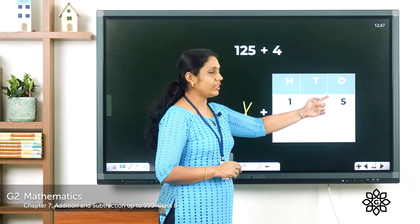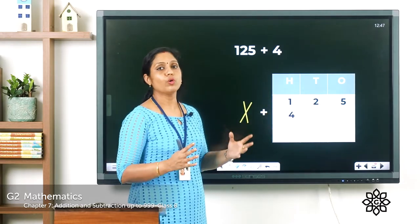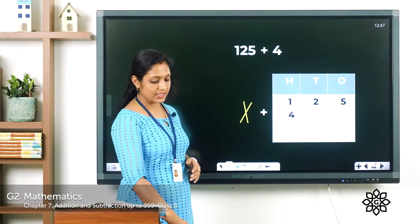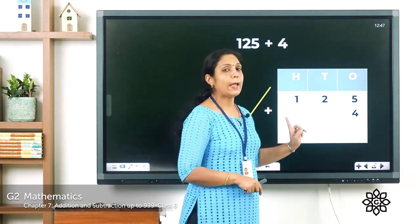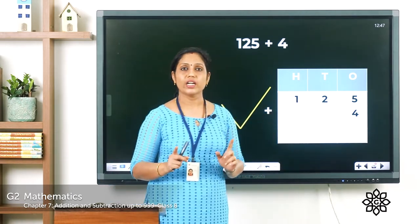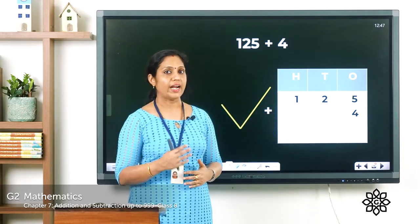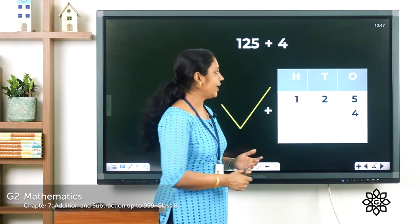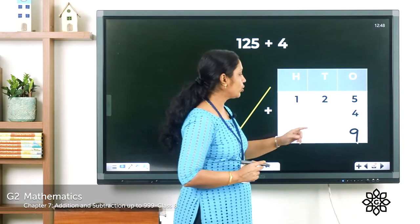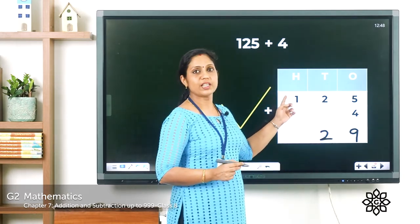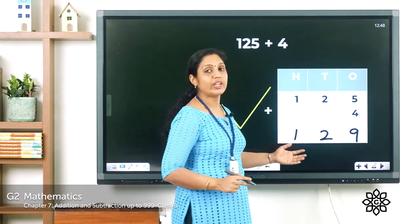That 4 should be placed in the ones place. If we place 4 in the hundreds place, we won't get the correct answer. The correct placement is 125 plus 4, where 4 is placed in the ones position. Then we add: 5 plus 4 is 9. In the tens place we have only 2, so we write 2. In the hundreds place we have 1 with no other number, so we write 1. We get the answer 129.